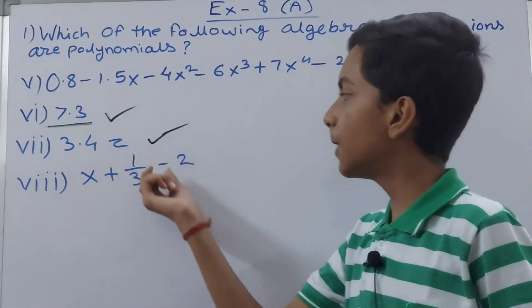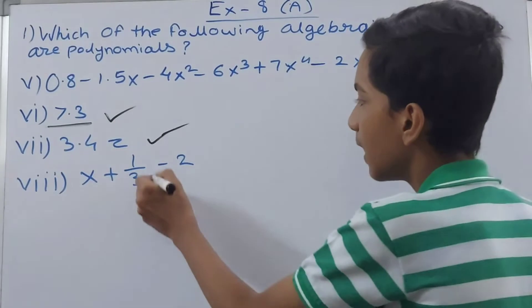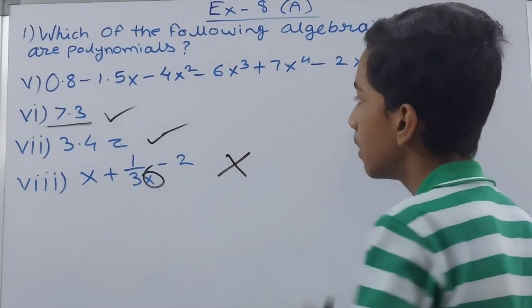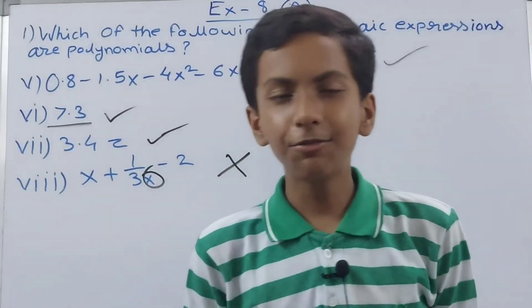Here also x plus 1 upon 3x, again we have this variable here so this is not a polynomial. Clear.